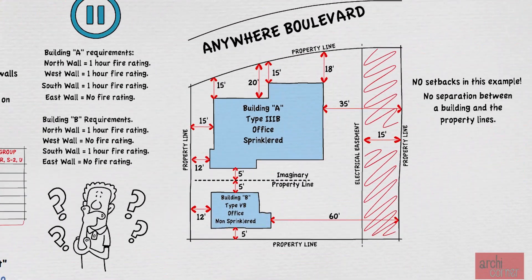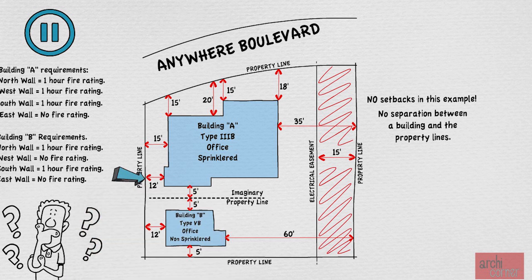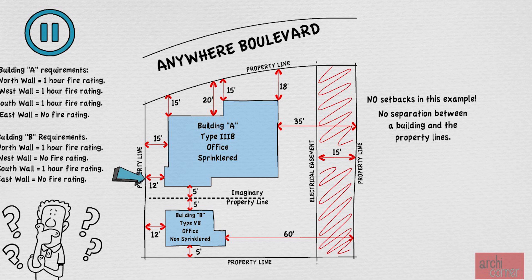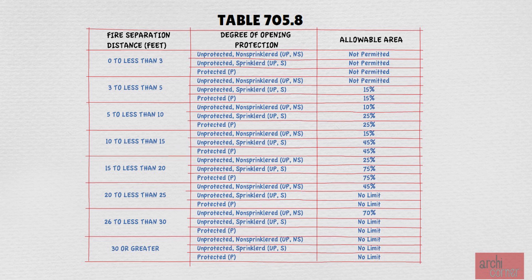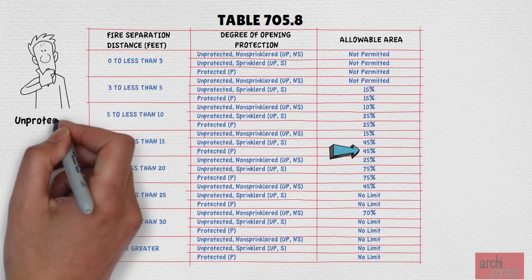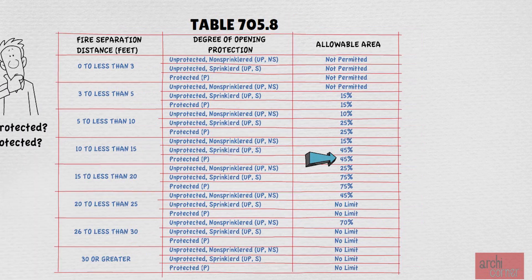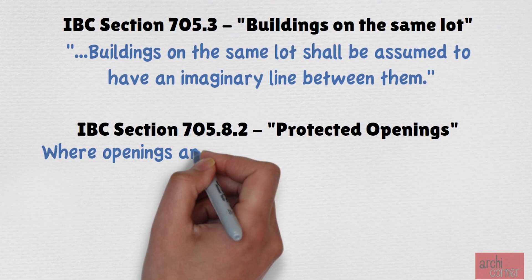To make sense of this, let's start with Building A and analyze the west walls. The distances between the building and the property line are 12 feet and 15 feet, and the building is sprinklered. Let's start with the first section that is 12 feet away from the property line. The chart tells us that if a wall is between 10 to less than 15 feet and the building is sprinklered, we are allowed to have 45% of our wall provided with unprotected openings. Even if the openings were protected, per the table the allowed opening percentage would still be 45% of the wall.